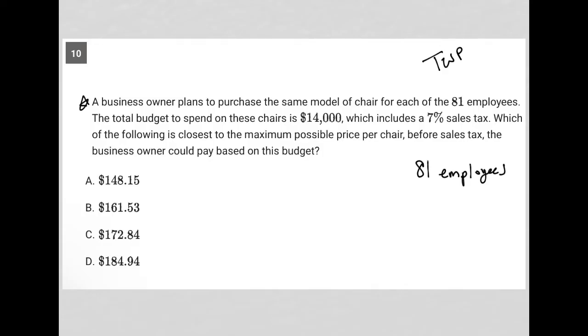The next sentence says the total budget to spend on these chairs is $14,000, which includes a 7% sales tax. So there is some value X, that's the real budget. And when you add 7% to that, which will be 0.07 times X, you get $14,000. So that's my translation of what I just read.